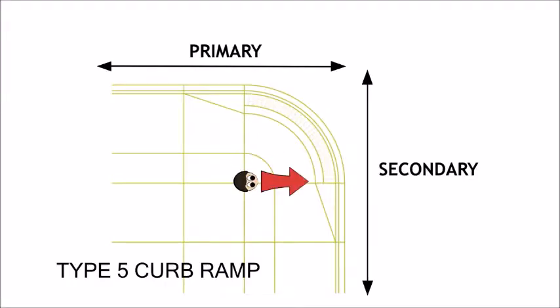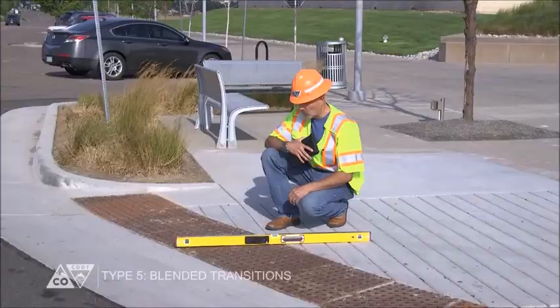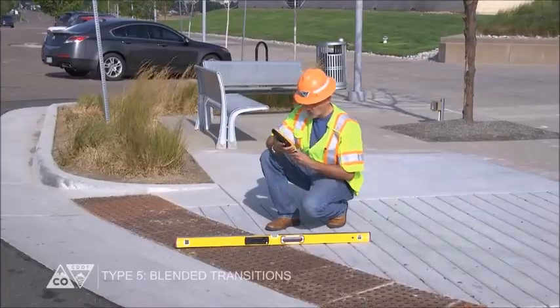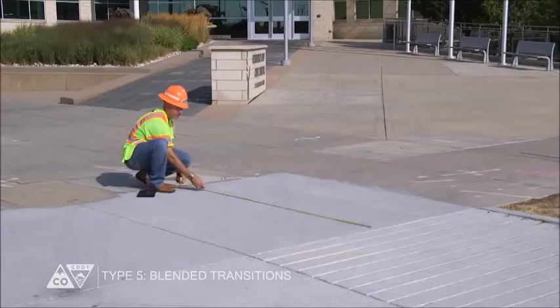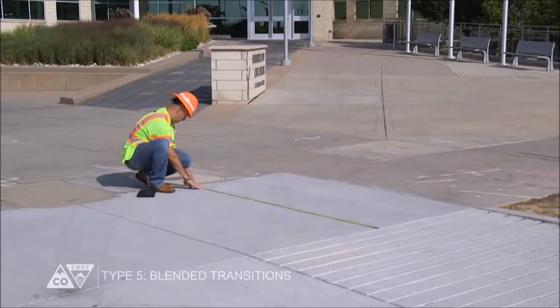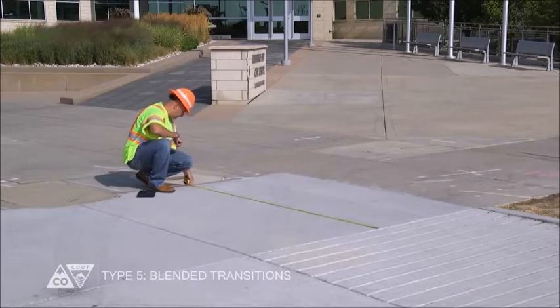Next, move so you're facing the secondary route or street. Position yourself in line with that pedestrian crossing and measure the running slope, counter slope, cross slope, and width the same way for the secondary route.